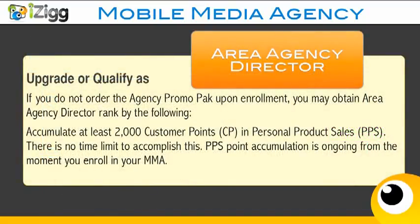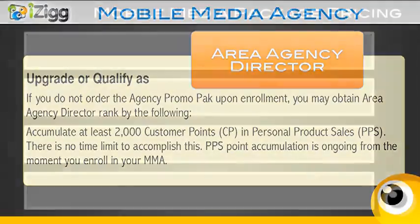You can also upgrade or qualify as an area agency director by simply purchasing the agency promo pack at any time that you choose, or you can accumulate at least 2,000 customer points in volume in personal product sales. There's no limit to accomplish this, and the personal point accumulation is ongoing from the moment that you enroll in your MMA.